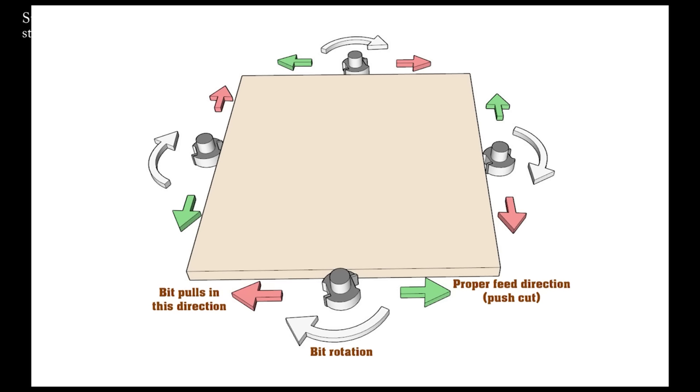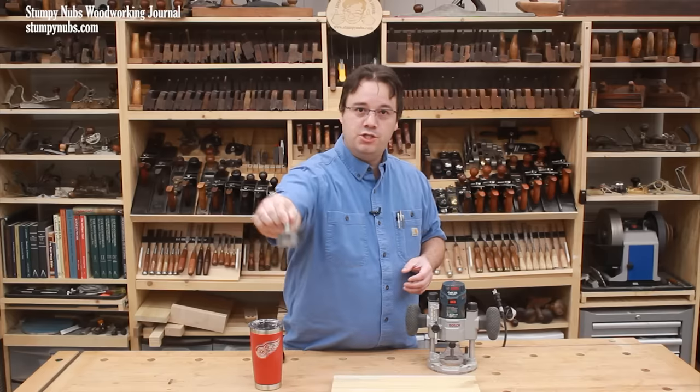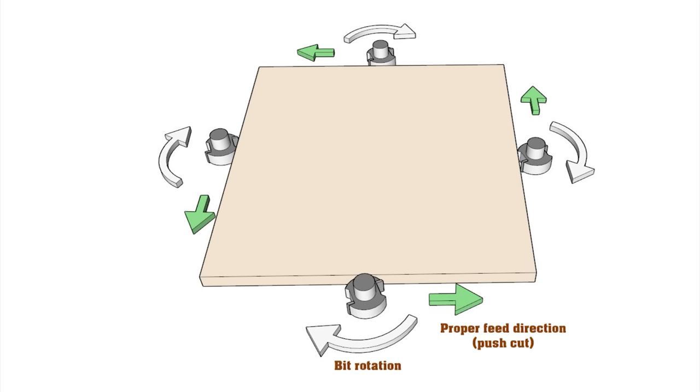You don't always route all the way around a workpiece though, do you? So look at each edge individually. The green arrow illustrates the direction of a push cut. When working on the front edge of a workpiece, a push cut is from left to right, but if you reach across the workpiece and route the back edge, you must go from right to left. Note how the push cutting direction also reverses depending on whether you're working up the right edge or down the left edge.